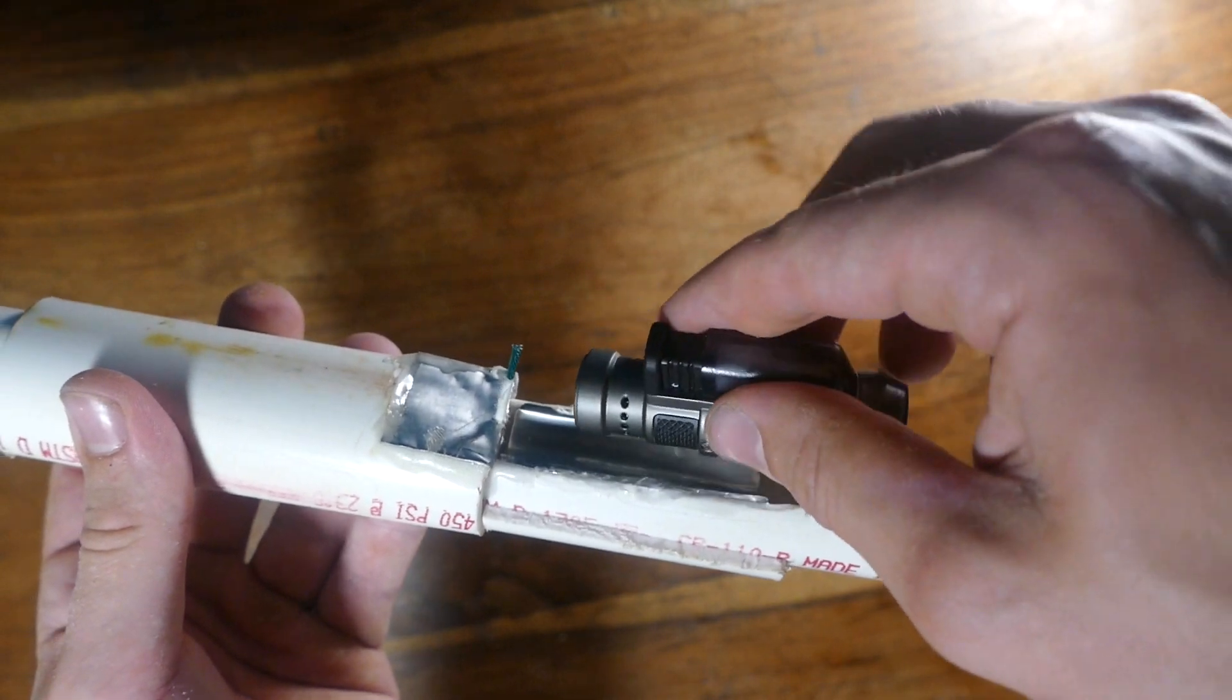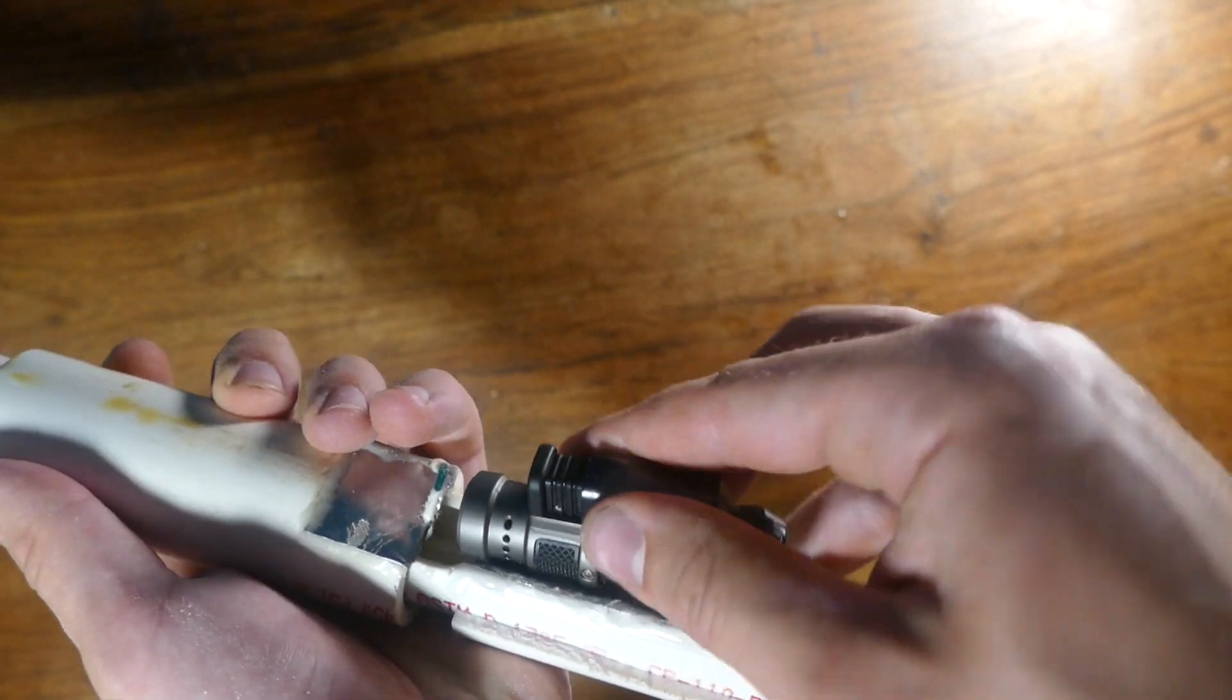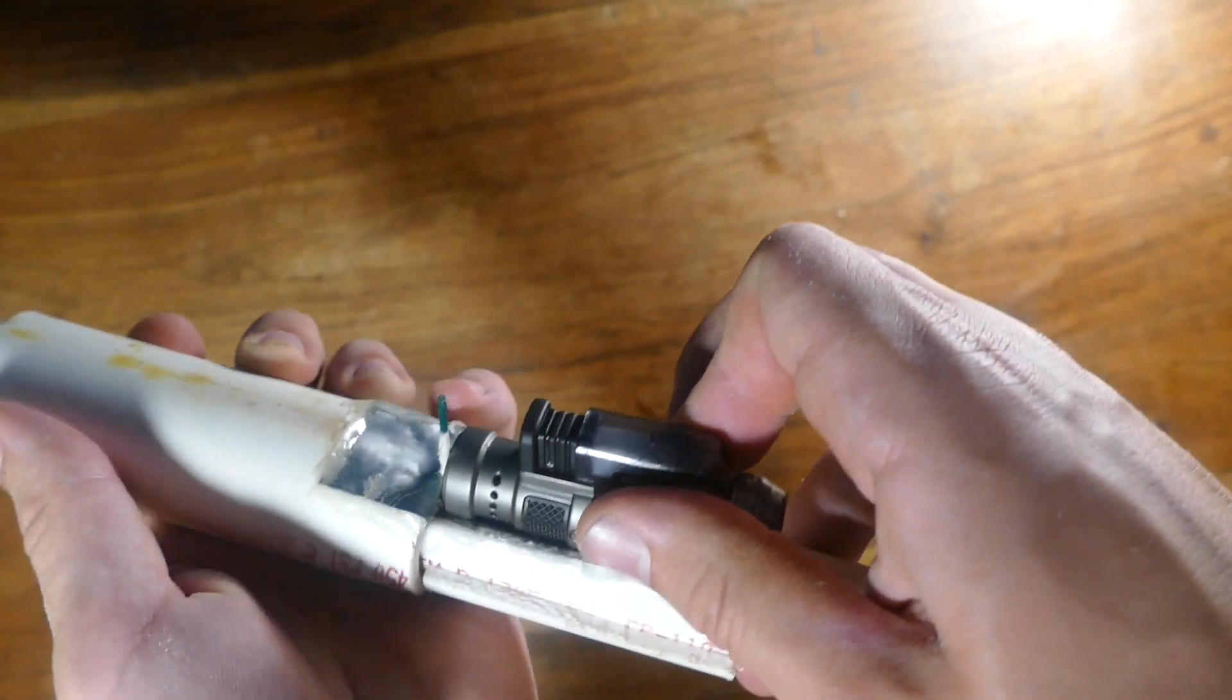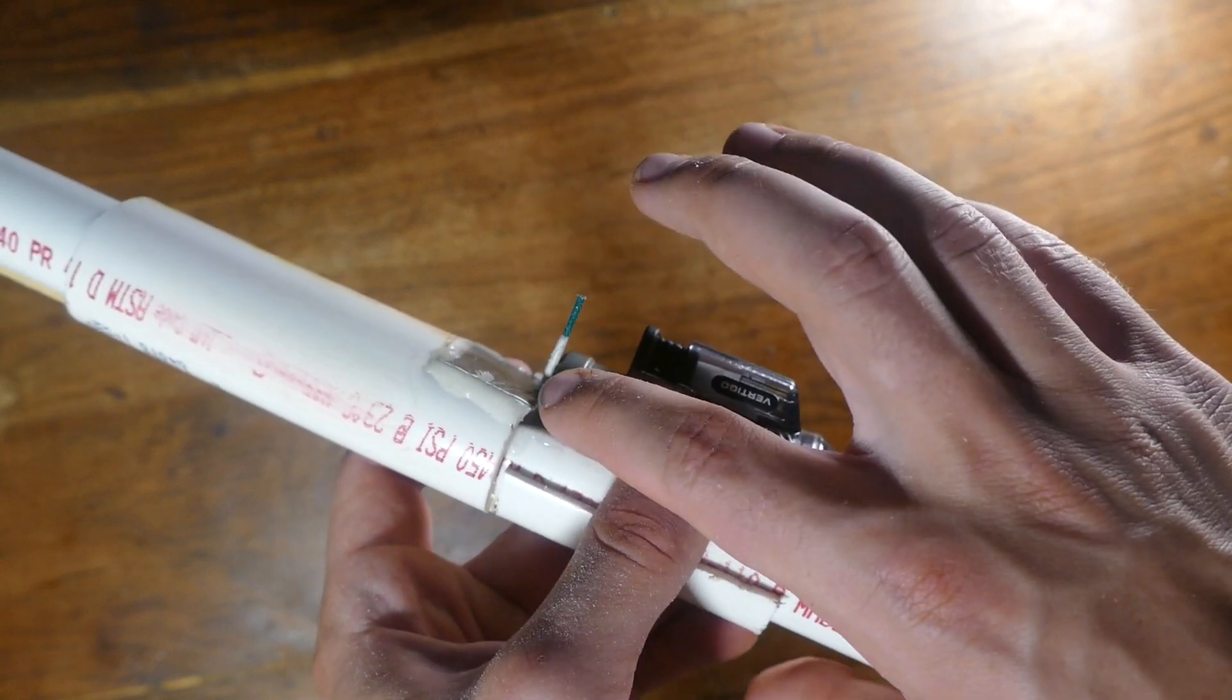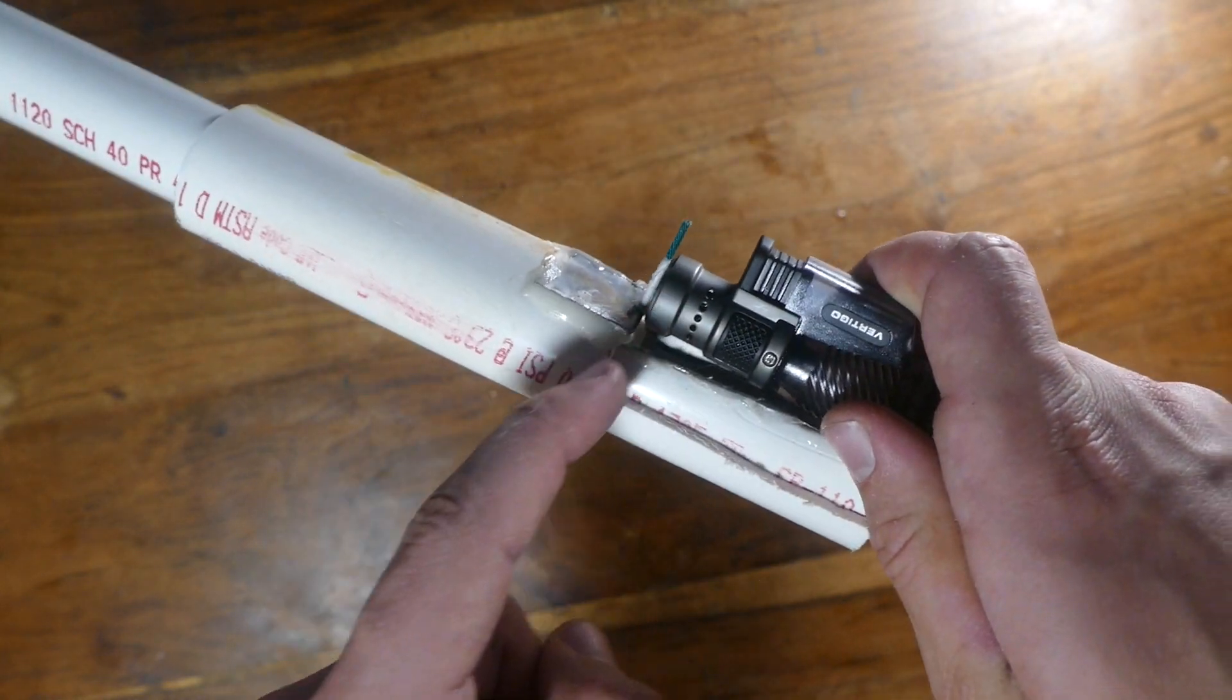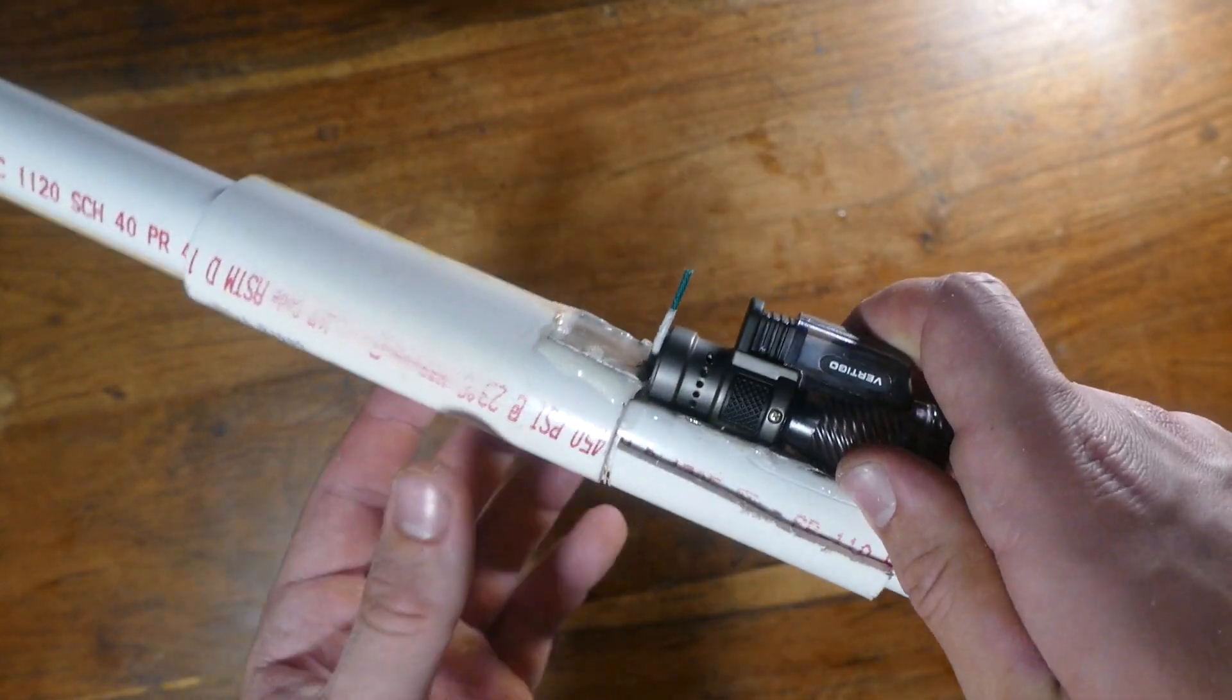And then once I hook up this lighter, it'll just sit right in there. I'll pull the trigger for the lighter, it'll light the fuse, travel down a very short distance and light off the rocket.